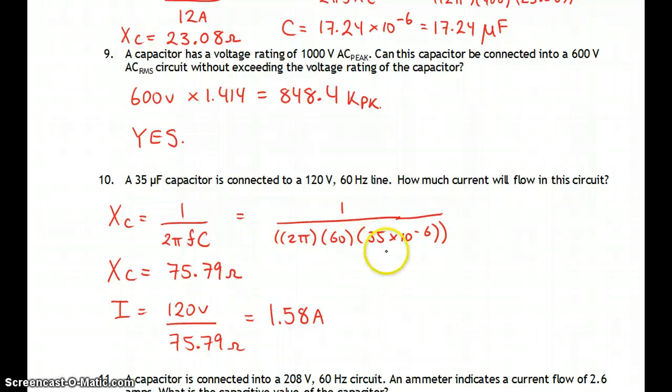We're going to put in 35 microfarads. Remember, the EXP button does the times 10 for you. 35 EXP or EE button to the negative 6 gives you 75.79 ohms. 120 divided by that reactance gives us 1.58 amps.